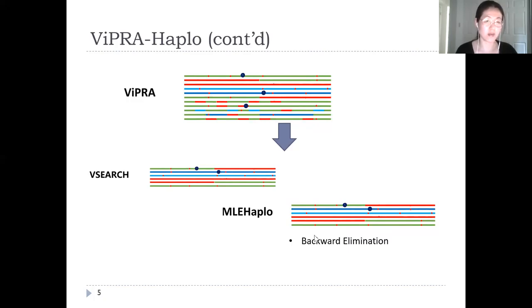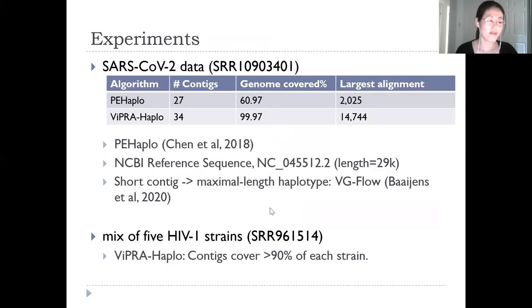We evaluate and compare ViPRA-Haplo with the most recent PEHaplo on real datasets with sequencing errors. When running experiments on SARS-CoV-2 data, ViPRA-Haplo reconstructed 34 contigs that cover 99.97% of the reference genome with the largest alignment of 14,700. PEHaplo only produced 27 contigs that cover only 61% of the reference genome with the largest alignment around 2,000.